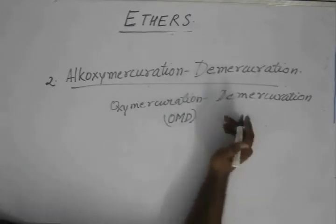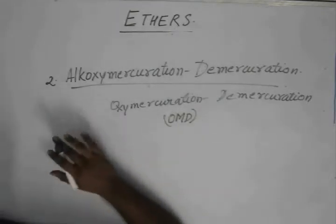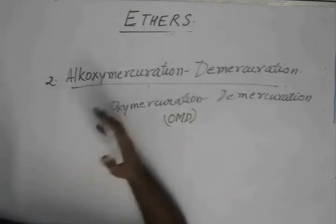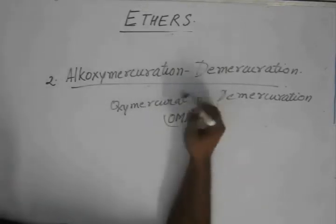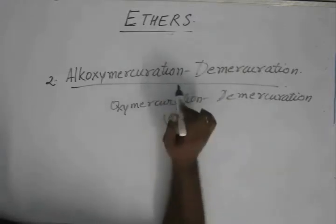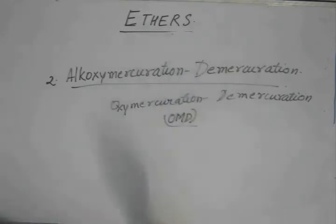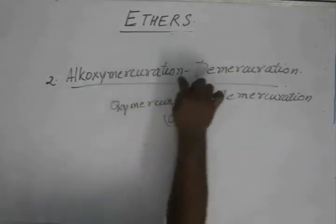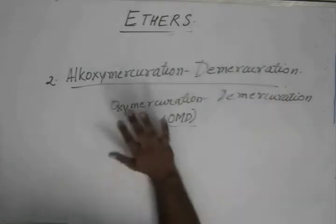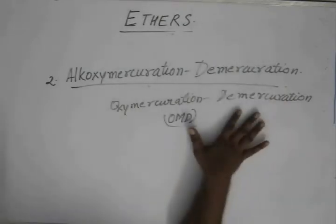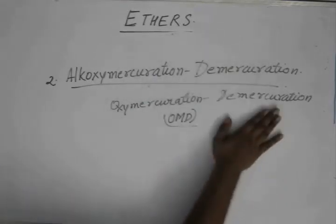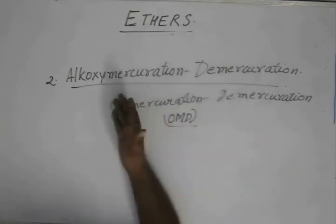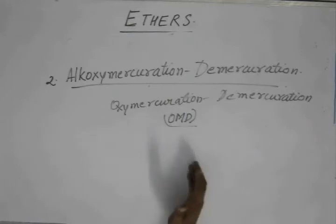This is going to be very helpful in alkoxymercuration-demercuration. I am not going to repeat the entire process of alkoxymercuration-demercuration because the whole reaction mechanism that is followed in AMD is the same as I taught in the case of OMD. The only difference is that in oxymercuration-demercuration, the reaction is used for the preparation of alcohols, while alkoxymercuration-demercuration is used in the preparation of ethers.